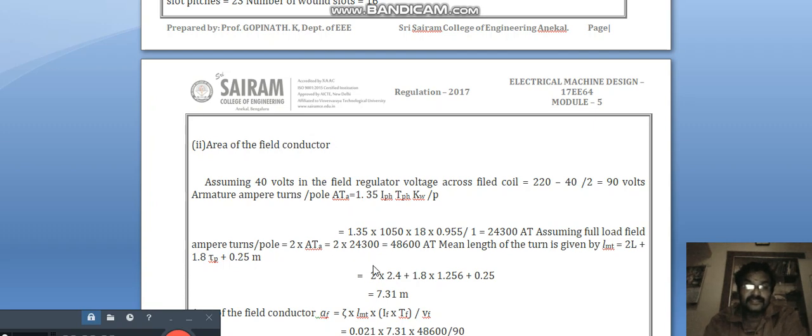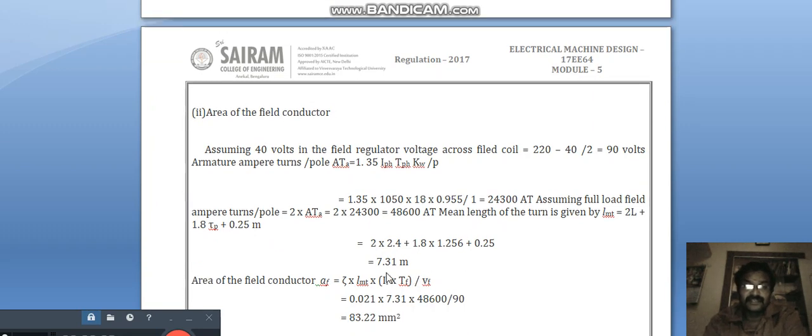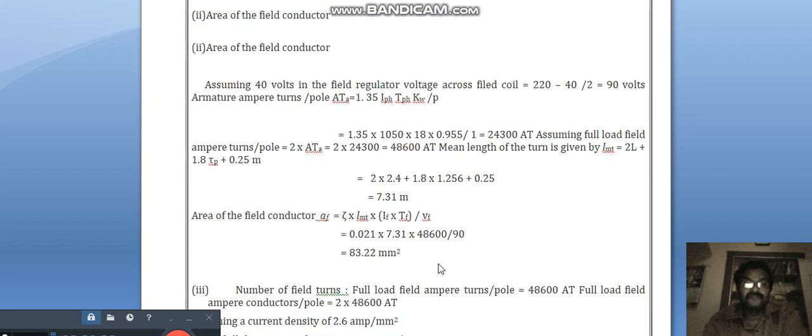Assuming full load field ampere turns per volt is equal to 2 × AT_a. So, 2 into 24,300, we will get 48,680. Mean length of the turn is given by LMT = 2L + 1.8τ_p + 0.25. So, 2 into L 2.2 plus 1.800 divided by width τ_p value 1.256 plus 0.25. So, we will get the value is equal to 7.31 meter.